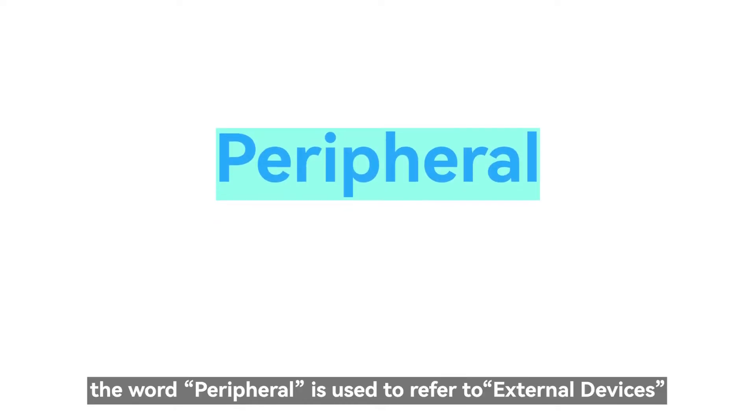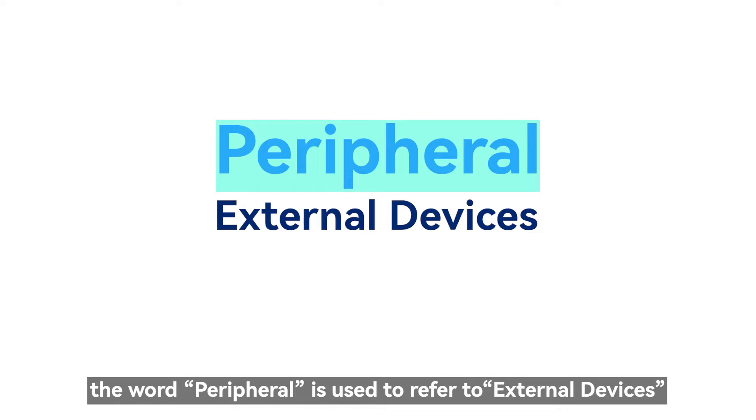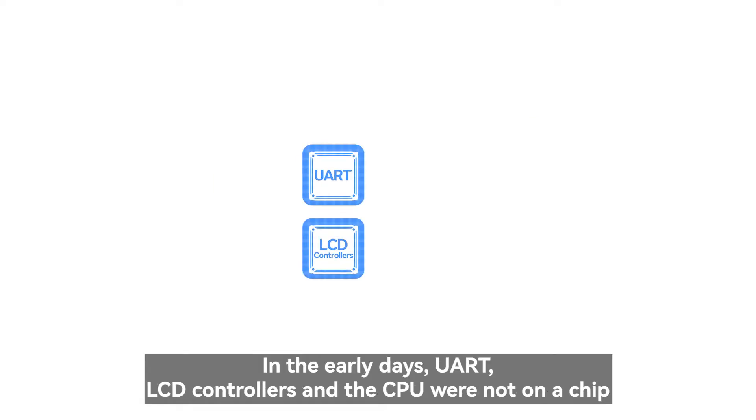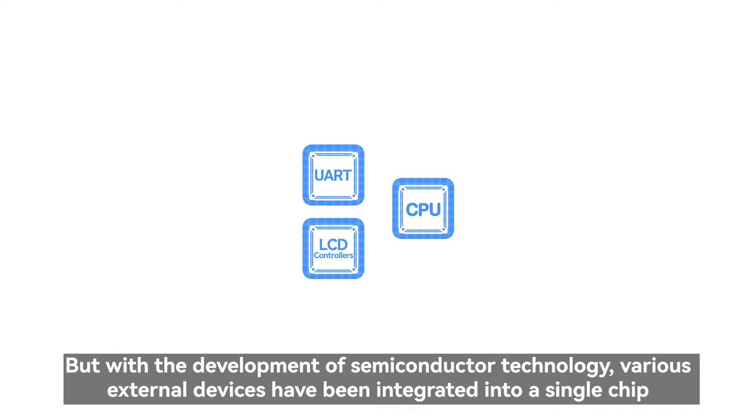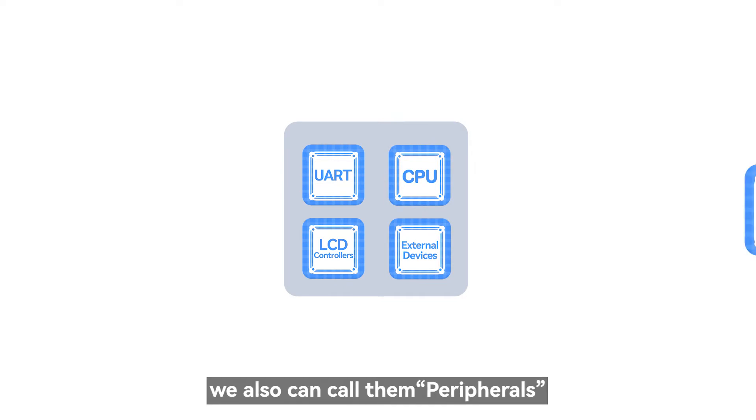The word peripheral is used to refer to external devices. In the early days, UART, LCD controllers, and the CPU were not on a chip. So it was called external devices, referred to as peripherals. But with the development of semiconductor technology, various external devices have been integrated into a single chip, we also can call them peripherals.